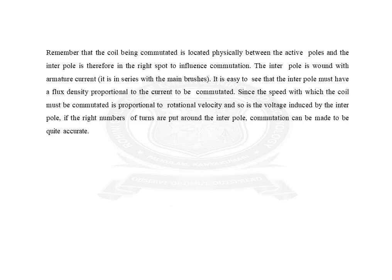The coil being commutated is located physically between the active poles and the interpoles, and the interpole is therefore in the right spot to influence commutation. The interpole is wound with armature current. The interpole must have a flux density proportional to the current to be commutated. Since the speed with which the coil must be commutated is proportional to the rotational velocity, if the right number of turns are put around the interpole, the commutation can be made quite accurate.